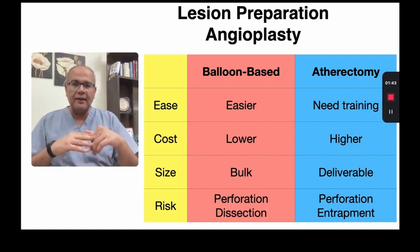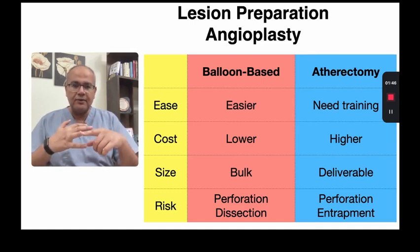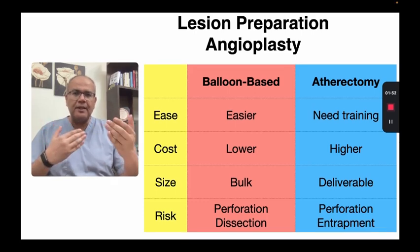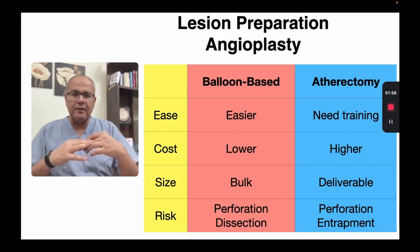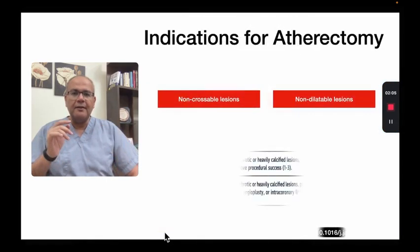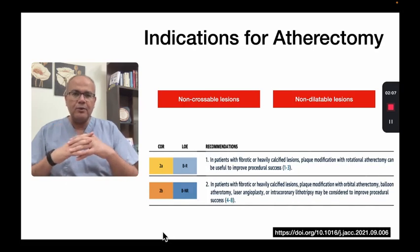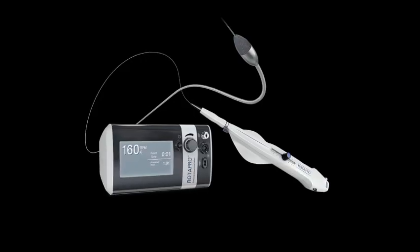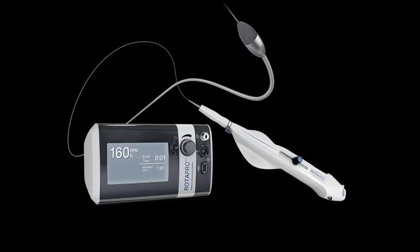Atherectomy-based techniques, on the other hand, are more expensive and need some training, but there's usually no issue in crossing a lesion with rotational ablation or orbital atherectomy. Of course, they come with the risk of burr entrapment. Among the three atherectomy approaches we have, looking at the latest ACC guidelines on coronary revascularization, the only device that gets close to a Class I indication is rotational atherectomy.